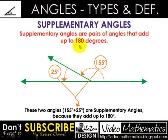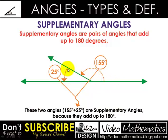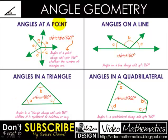Now we go for supplementary angles. Supplementary angles are a pair of angles that add up to 180 degrees. The concept is similar to complementary angles, but the difference is that they add up to 180 degrees. As this angle is 155 degrees and this is 25 degrees, by adding them the sum is 180 degrees — these are supplementary angles.